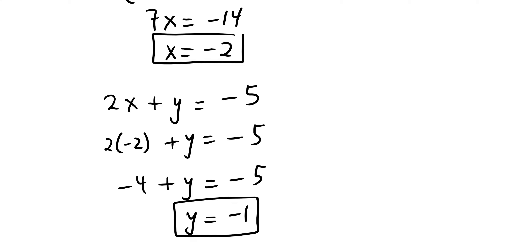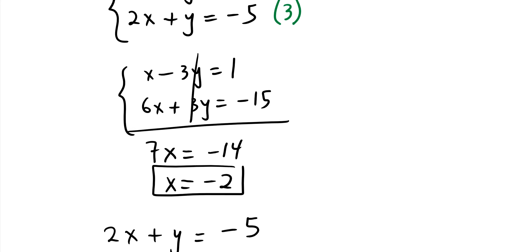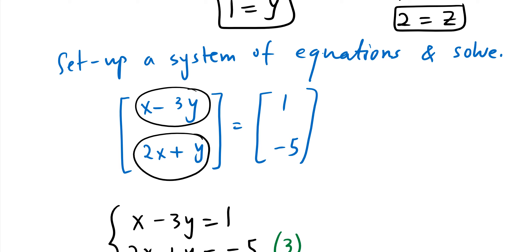To wrap up this section: we learned how to perform addition, subtraction, and scalar multiplication of matrices. We also learned that two matrices are equal if they have the same size and corresponding entries are equal. We saw how to use that definition to set up and solve systems of equations — a skill that will be important in later sections.